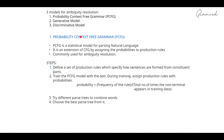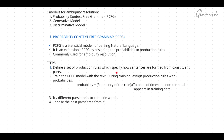PCFG is used for ambiguity resolution. There are different steps you need to follow in order to resolve ambiguity using PCFG. The first step is to define a set of production rules which specify how sentences are formed from constituent parts. For example, S tends to NP VP — those are the production rules. You define these production rules in order to specify how sentences are formed from their constituent parts.